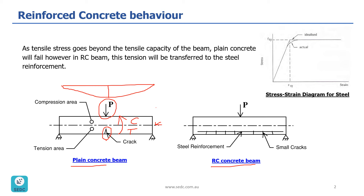To avoid this failure, if we add steel reinforcement to the bottom of the beam, instead of having a big crack in the middle we get small cracks developing along the length of the beam. The tension is transferred to the steel reinforcement, and as a result the ultimate capacity of the beam is much higher.